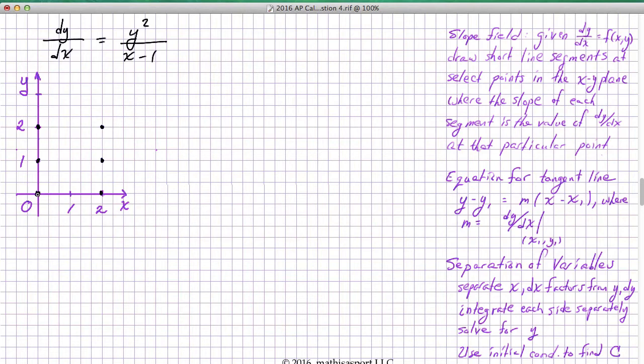Let's start with the origin. x is 0, y is 0. So y squared is going to give us a 0 in the numerator, and 0 minus 1 gives us a negative 1. Basically the slope is 0. So we just draw a line segment whose slope is 0. Now if you think about it, when x is 2, we're going to get the same result. Because even though the denominator changes to 1 instead of negative 1, y is still 0, and squaring it doesn't change that.